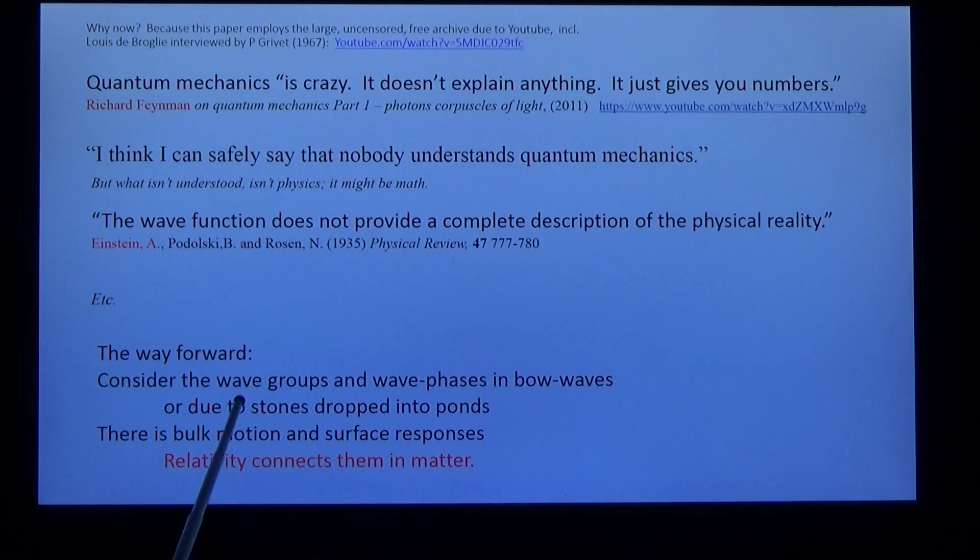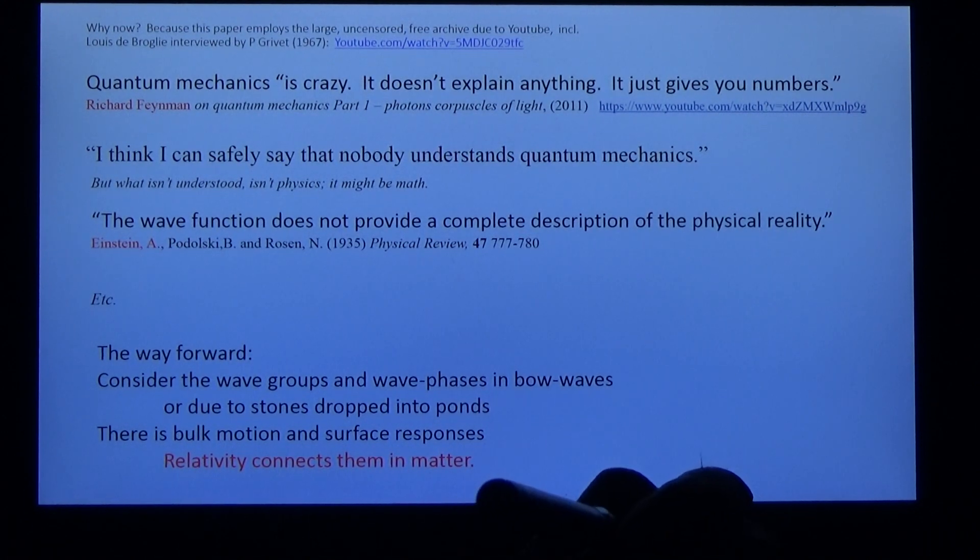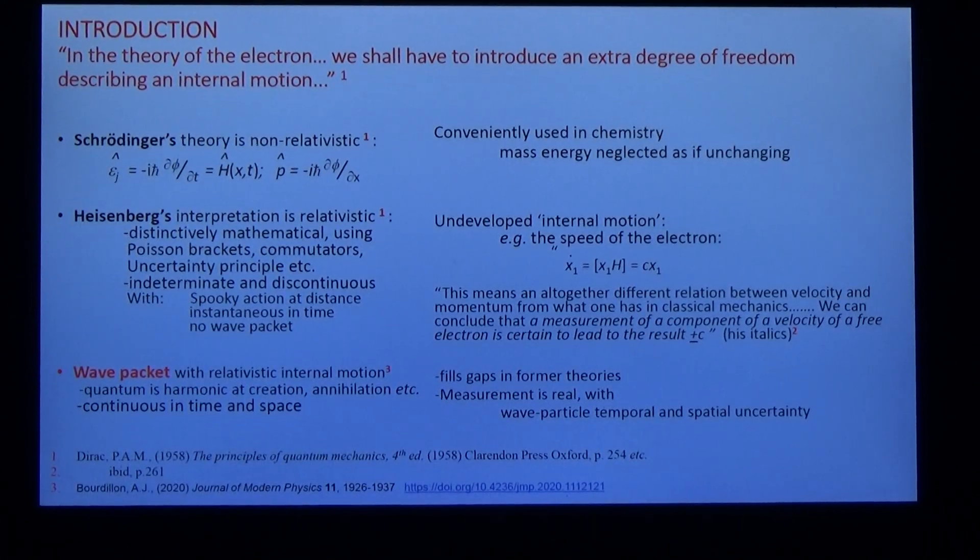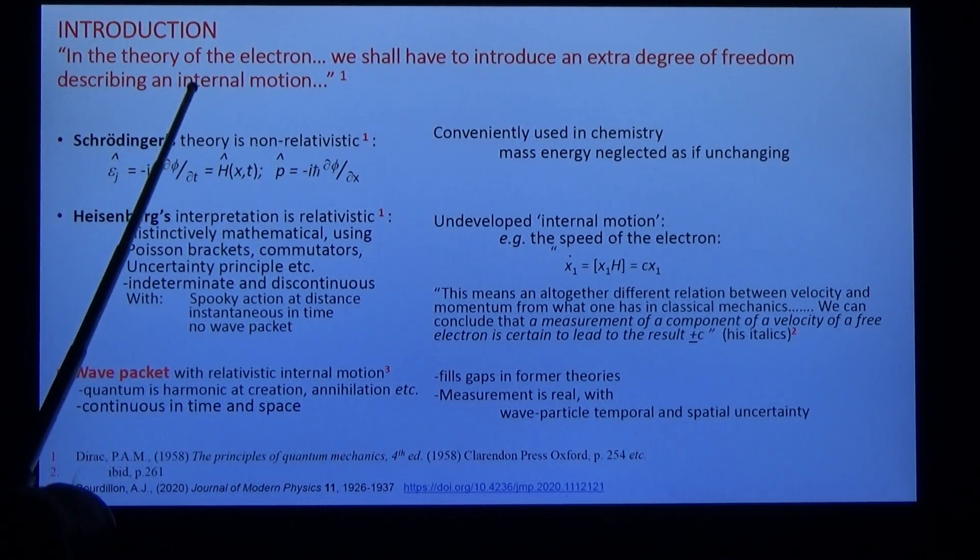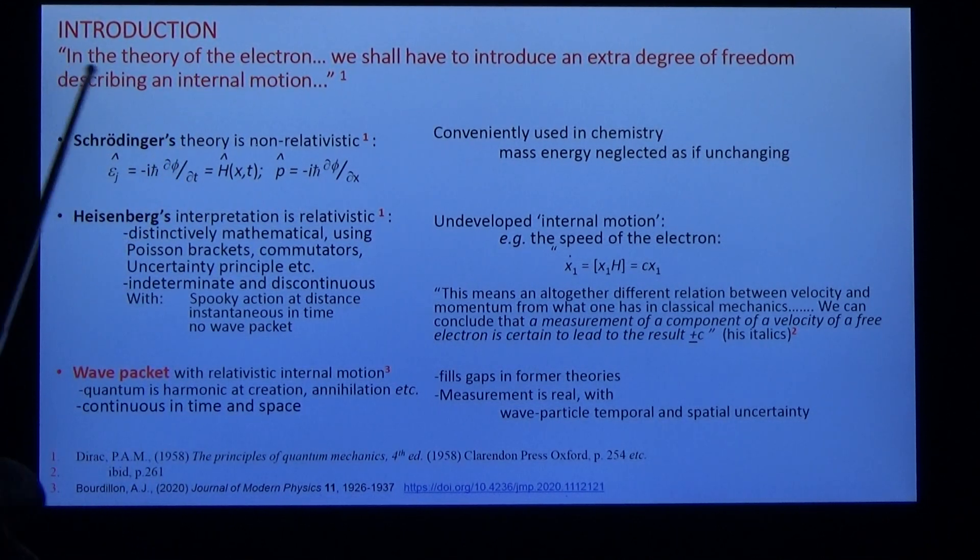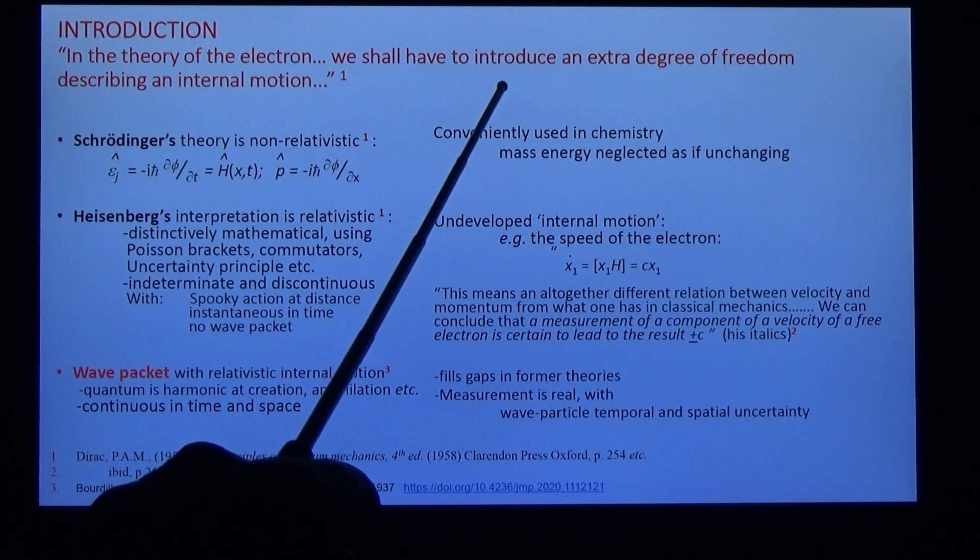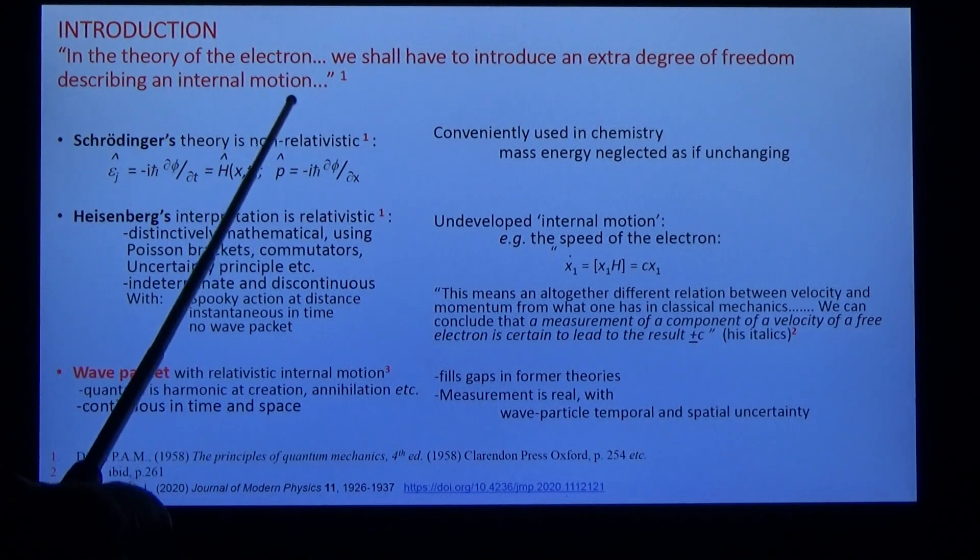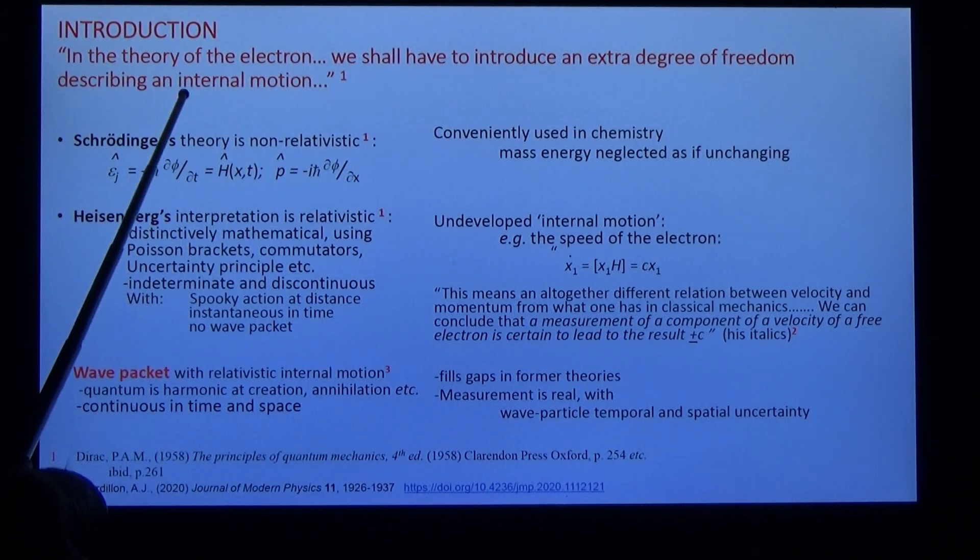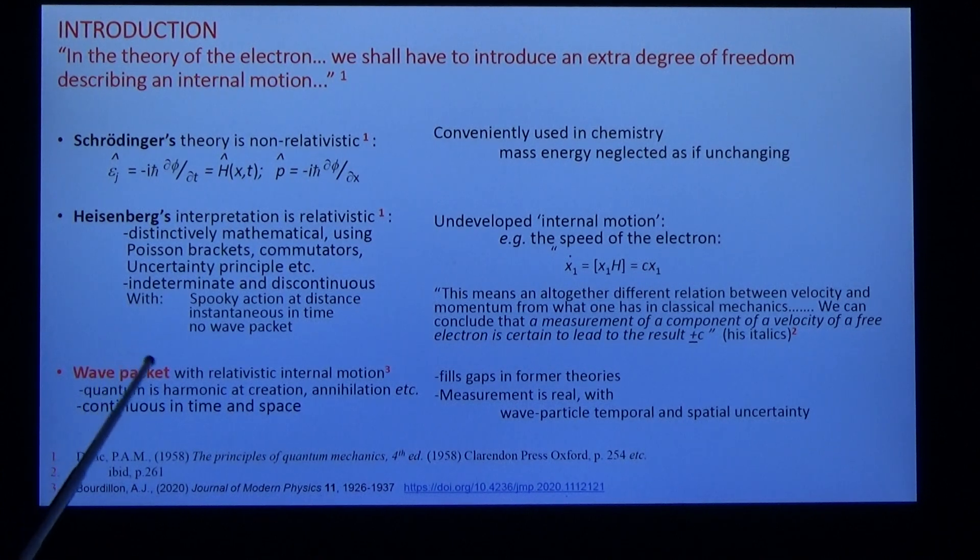In matter, the issue is internal motion. Dirac wrote that in the theory of the electron, we shall have to introduce an extra degree of freedom describing internal motion. But he said very little about internal motion.